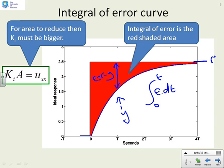Now, if this area is going to get smaller, then ki has to get bigger, because what we've decided is that ki times A is a constant. U steady state is fixed by the set point. So, if we want the area to get smaller, this red area to get smaller, ki must be bigger.